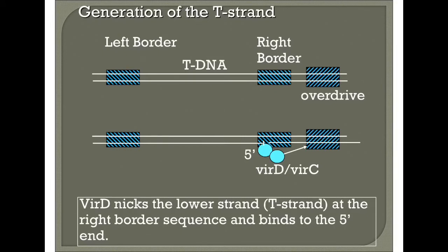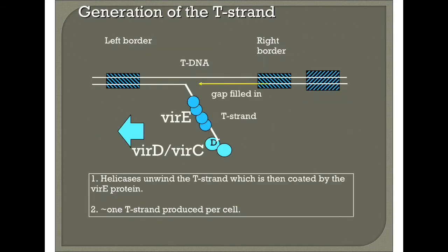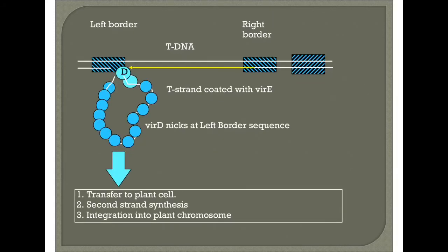Generation of the T-strand: the Ti plasmid contains the tumor-inducing region flanked by right and left borders. The virulence genes are activated by plant products such as acetosyringone released from the cut ends of the plant surface. VirD nicks the lower strand of the T-strand at the right border sequence and binds to the end. A helicase unwinds the T-strand, which is then coated by VirE proteins. One T-strand is produced per cell. VirD then nicks the left border, after which the T-strand is transferred to the plant cell.